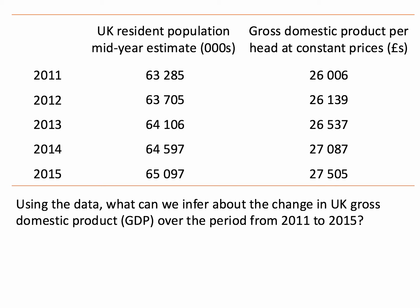Here's some data for the UK from 2011 through to 2015, and we have two sets of data. The first is the estimated resident population, mid-year estimate, in thousands — the population has grown from approximately 63.3 million in 2011, through to just over 65 million in 2015. We've also got a second column showing GDP per head, GDP per capita, at constant prices — in other words, it's been inflation adjusted — measured in pounds, and that's risen from £26,000 per year to just over £27,500.